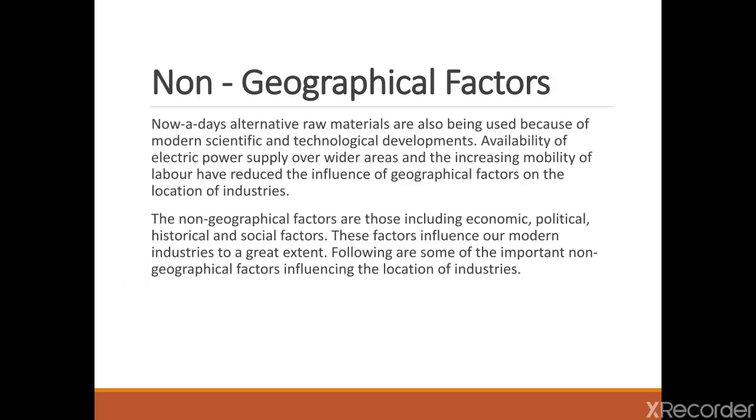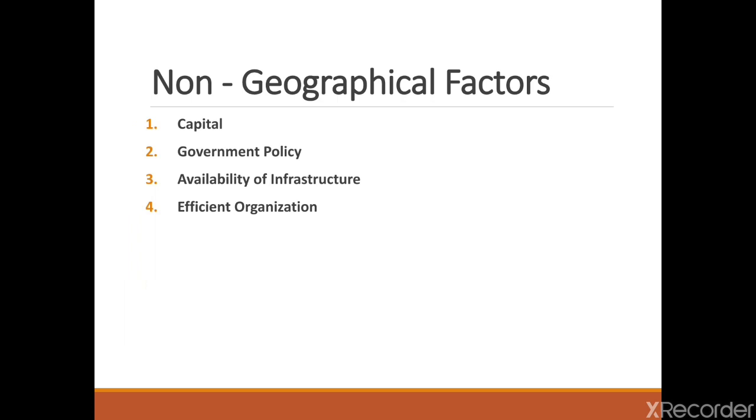Non-geographical factors: Nowadays, alternative raw materials are also being used due to modern scientific and technological development. Availability of electric power supply over wider areas and the increasing mobility of labor have reduced the influences of geographical factors on the location of industries. The non-geographical factors include economic, political, historical and social factors. These are capital: Modern industries are capital intensive and require huge investment. Capitalization is available in urban areas. Big cities like Mumbai, Kolkata, Delhi and Chennai are big industrial centers because of the availability of capital in these areas.